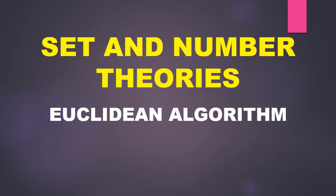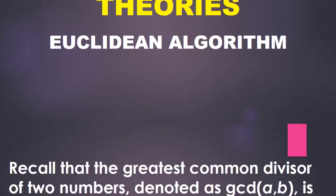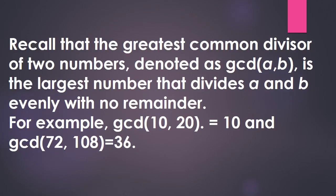Before we proceed with how the Euclidean algorithm works, we should recall that the greatest common divisor of two numbers, denoted as GCD(A, B), is the largest number that divides A and B evenly with no remainder. For example, the GCD of 10 and 20 is equal to 10, and the GCD of 72 and 108 is equal to 36.